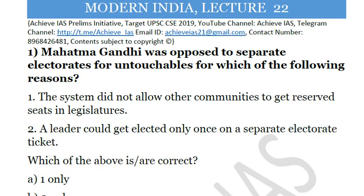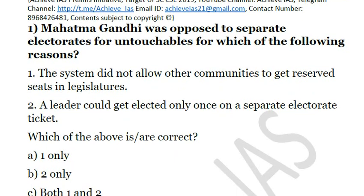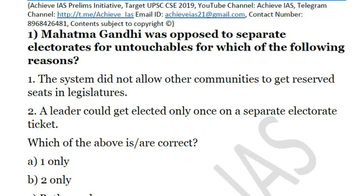Question 1: Mahatma Gandhi was opposed to separate electorates for untouchables for which of the following reasons? First, the system did not allow other communities to get reserved seats in legislatures. Second, the leader could get elected only once on a separate electorate ticket. We have to choose which of the above statements is correct.